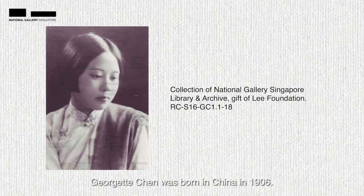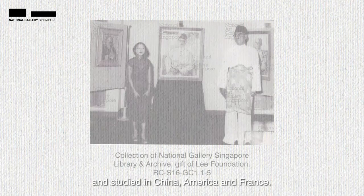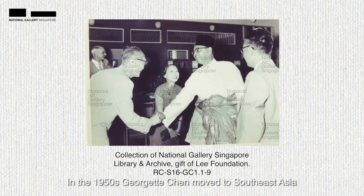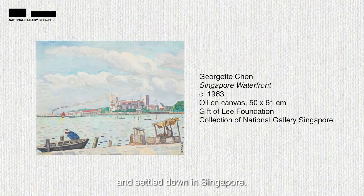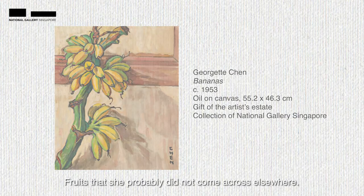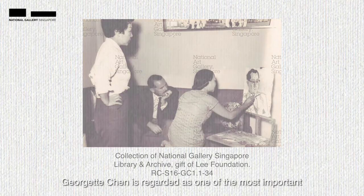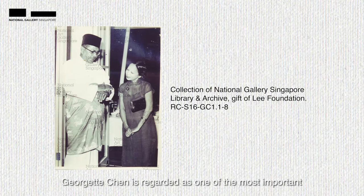I believe it has a lot to do with her life experiences. Georgia Chen was born in China in 1906. She was very well-travelled and studied in China, America and France. In the 1950s, Georgia Chen moved to Southeast Asia and settled down in Singapore. When she was in Southeast Asia, she found herself surrounded by fascinating fruits she probably did not come across elsewhere. This still-life painting reflects the strong connection that she felt with Singapore. Through her art, Georgia Chen is regarded as one of the most important female local artists in the art history of Singapore.